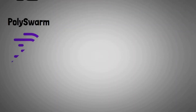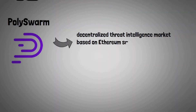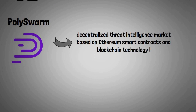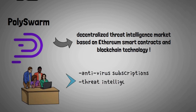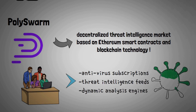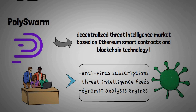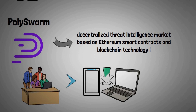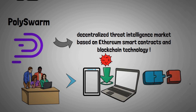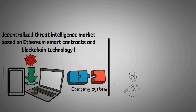PolySwarm wants to create a decentralized threat intelligence market based on Ethereum smart contracts and blockchain technology. Today, companies and enterprises rely on an ad hoc mixture of antivirus subscriptions, threat intelligence feeds, and assorted dynamic analysis engines to defend against evolving malicious cyber activity. But even with all these subscriptions, it's hard to defend yourself as a company. Every day people bring their own devices to work — from smartphones to laptops and many other smart devices — therefore it's possible that an employee accidentally downloads a virus, and the moment that employee connects that device to the company network, suddenly that puts the whole company in jeopardy.